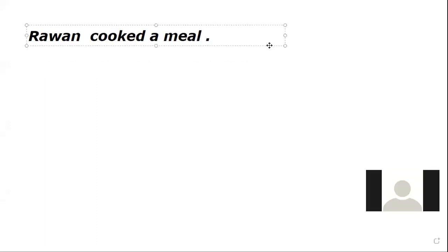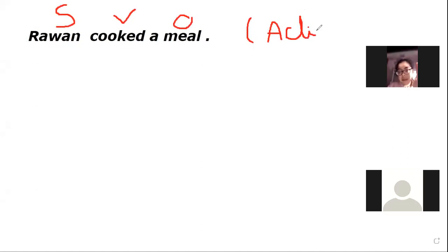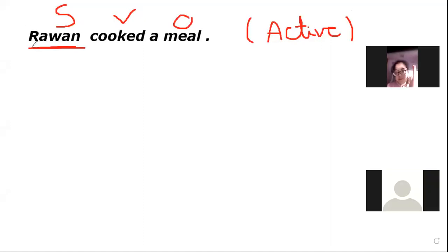Rawan cooked the meal. So what did Rawan do? She cooked the meal. We look at the sentence: 'Rawan' is the subject, 'cooked' is the verb, and 'a meal' is the object. Now we are going to change from active into passive — من المعلوم إلى المجهول. We know it is active because we have a subject — Rawan — present in the sentence.